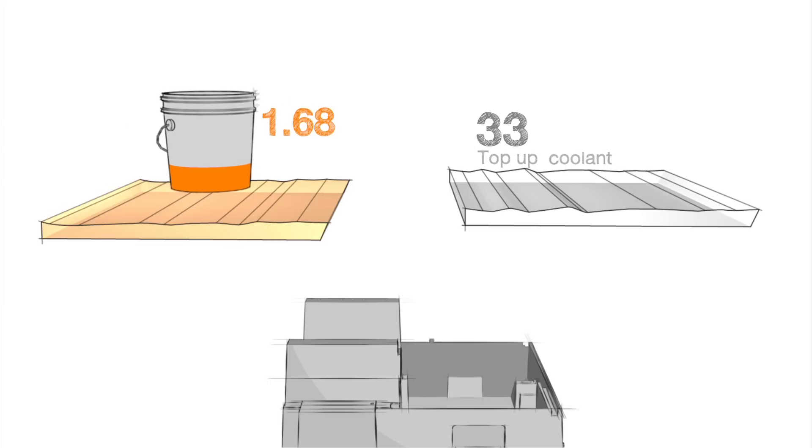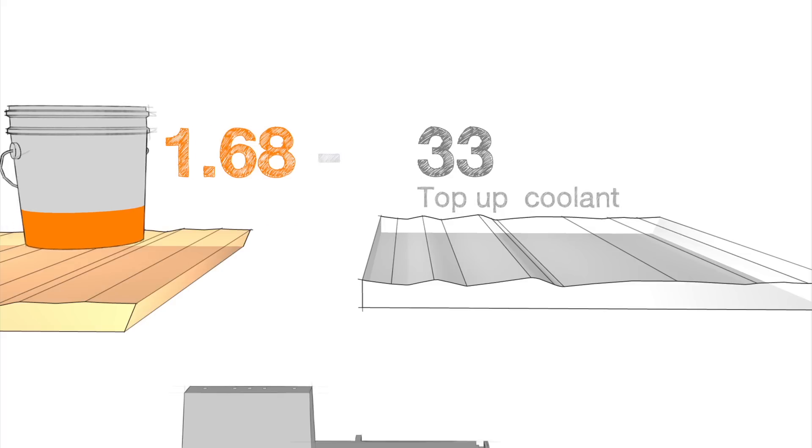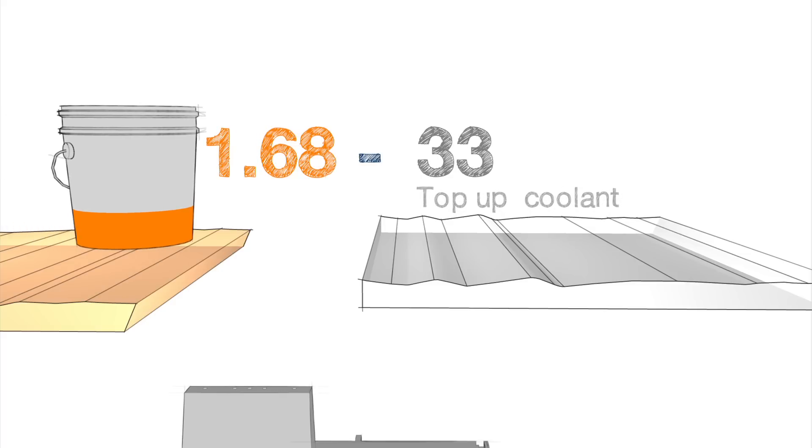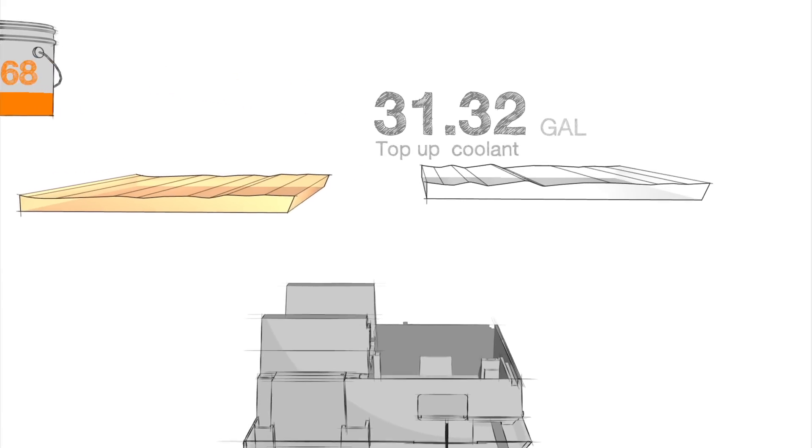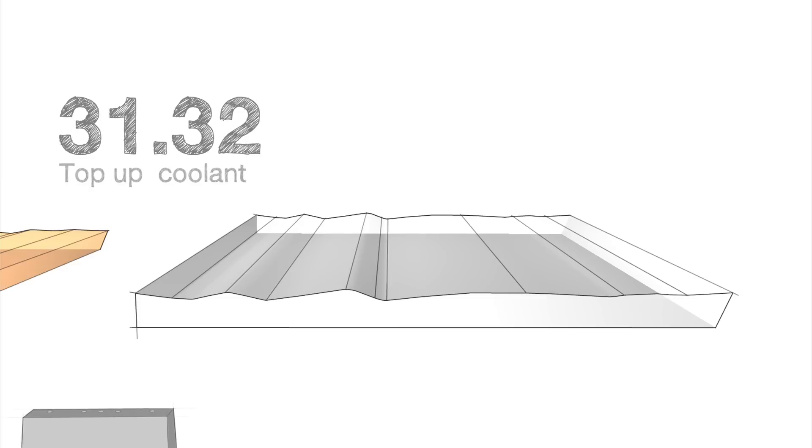Now we'll subtract the 1.68 gallons from our starting 33 gallon top-up total since it's part of what we're going to add to the tank. This gives us an adjusted top-up coolant value of 31.32 gallons. Now let's set our 1.68 gallons of concentrate off to the side for a moment while we calculate how much concentrate we will need for the top-up coolant.